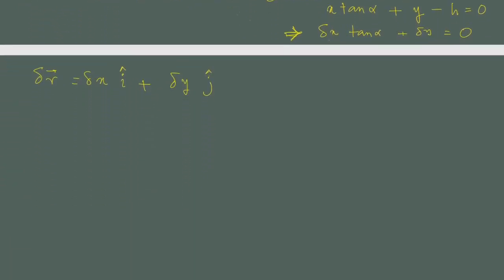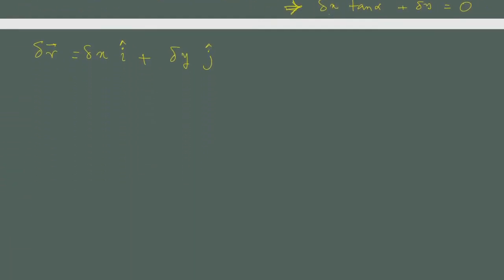Now we discuss another important concept: virtual work. Consider a particle which is being subjected to a force F. Virtual work is defined as the dot product between the force and the virtual displacement. Here the force means the total force, which can include the external force as well as the constraint forces. This total force dotted with the virtual displacement is called virtual work.